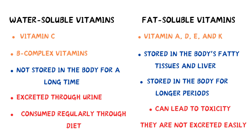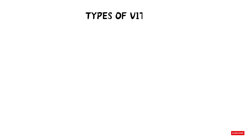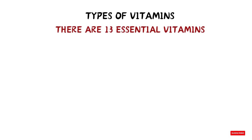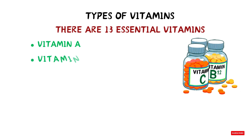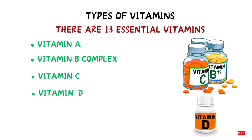Each vitamin plays a specific role in the body, and deficiencies can cause various health issues. Let's get started on the types of vitamins. The essential vitamins include vitamin A, vitamin B complex, vitamin C, vitamin D, vitamin E, and vitamin K. Let's discuss these vitamins one by one.